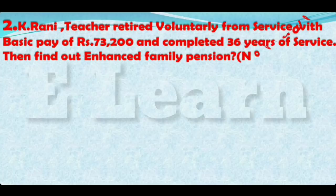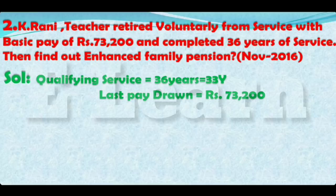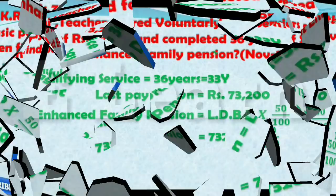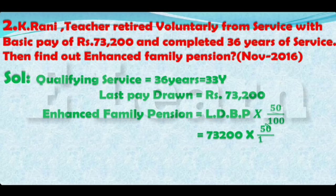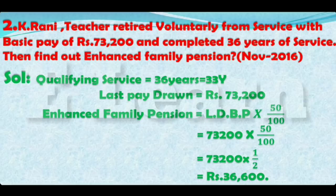Second problem: K Rani, a teacher, retired voluntarily from service with basic pay of Rs. 73,200 and completed 36 years of service. Find out enhanced family pension. In this case, the employee has done 36 years of service, which means maximum service. Therefore, the enhanced family pension is equal to Last Drawn Basic Pay into 50 by 100, that is 73,200 into 50 by 100, which equals 36,600 rupees.